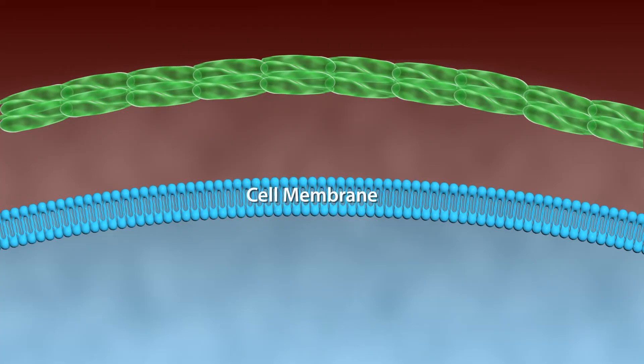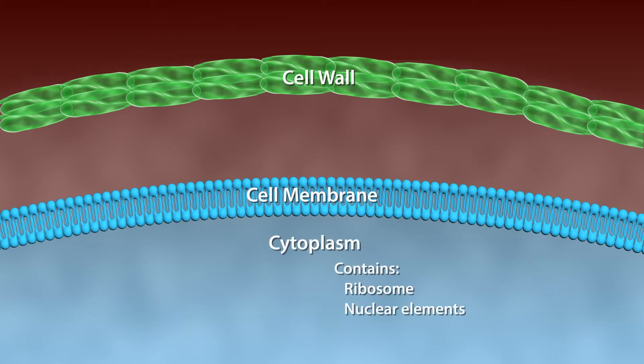Structurally, bacteria consists of a cell membrane surrounded by the cell wall. Internal to the cell membrane there is cytoplasm, which contains ribosome and nuclear elements.